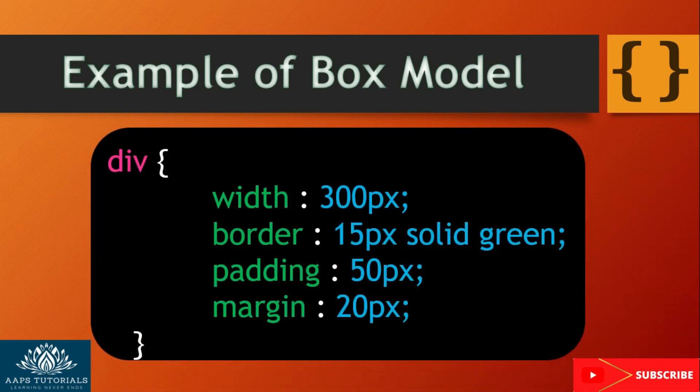Let us now see a simple example for the box model. Here we give parameters to the div element: div with open curly brackets, width 300px, border 15px solid green, padding 50px, margin 20px, close curly brackets. These properties render a box model with a definite border and a color around the content.